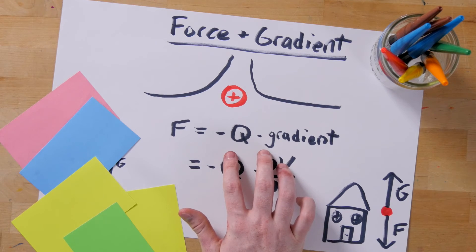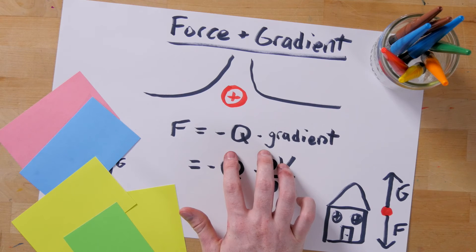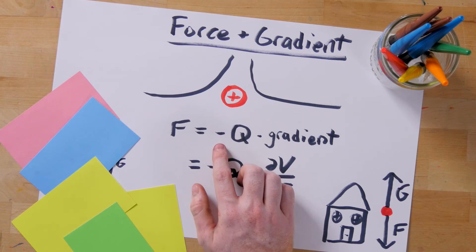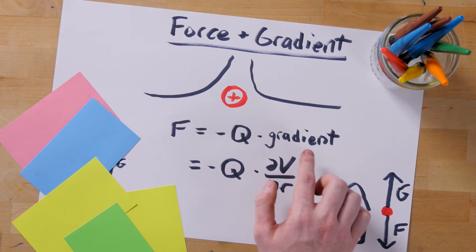Mathematically, the force exerted on a charged particle in a gradient of electric potential is given by this equation. What it says is that the force is equal to the negative product of the charge and the gradient.